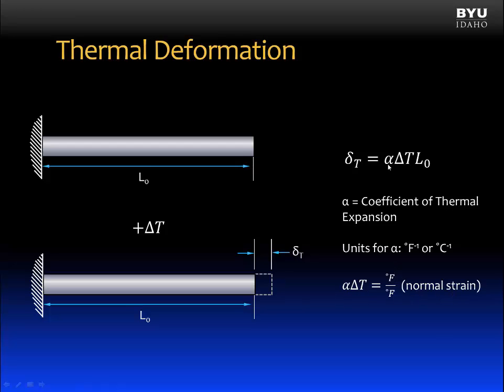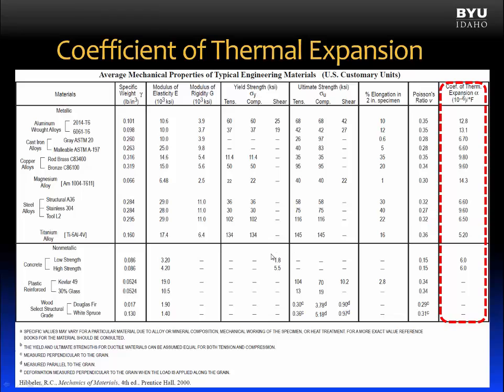If you multiply a strain by the original length, we get the deflection, the change in length. Most tables and mechanical properties of materials will include values for α. You can see that the units for α are very small, 10 to the negative sixth per degree Fahrenheit.